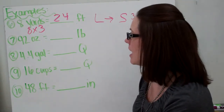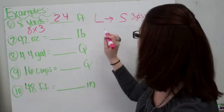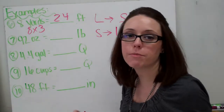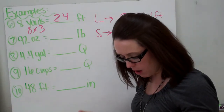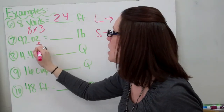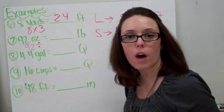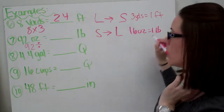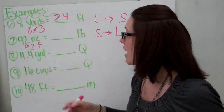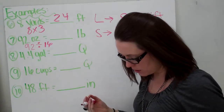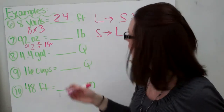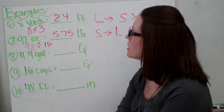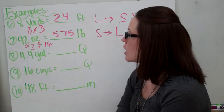Number seven: 92 ounces to pounds. You're going from a smaller to a larger unit, so you know you are going to divide. So 92 divided by what? We know that 16 ounces are in one pound, so we do 92 divided by 16. When you do that, you get 5.75 pounds. So 92 ounces is the same as 5.75 pounds.